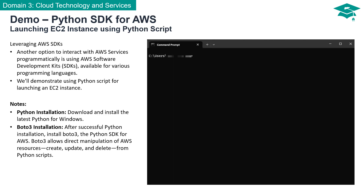Another option for accessing and managing AWS services is SDKs, the Software Development Kits. SDKs make it easier to use AWS services through an API designed for your programming language or platform. SDKs enable you to use AWS services with existing applications or create entirely new applications to run on AWS. In our demonstration, we'll specifically use a Python script to dynamically launch an EC2 instance, showcasing the potential of AWS SDKs in action.